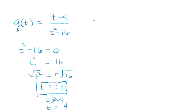Another way of looking at this: you could factor the bottom as t minus 4 times t plus 4. We have a term in the top and one in the bottom that are the same, so we need to cancel those out.